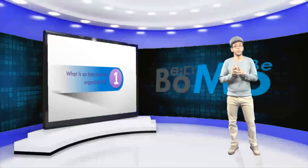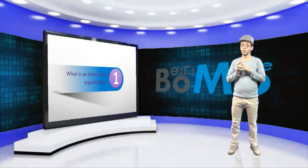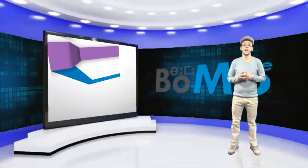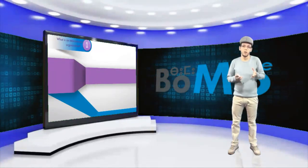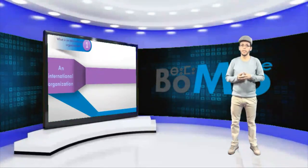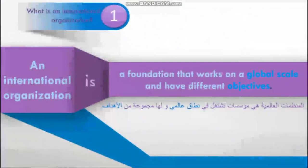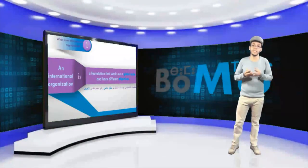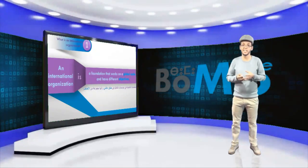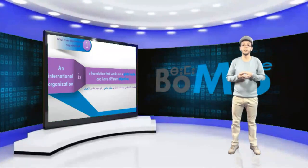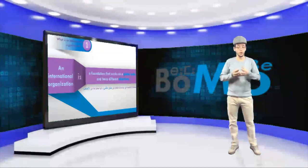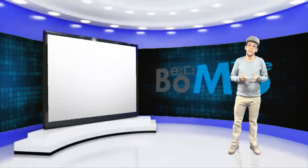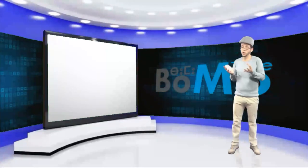Let us start with the definition of an international organization. What is an international organization? According to Wikipedia, an international organization is a foundation that works on a global scale and has different objectives. I guess that this definition is not enough to have a clearer picture, so let's take a look at these familiar pictures.